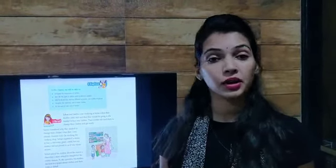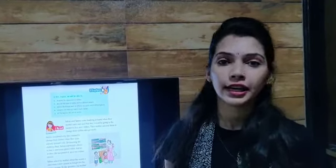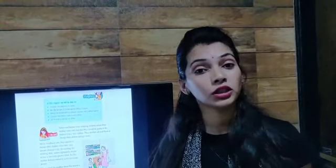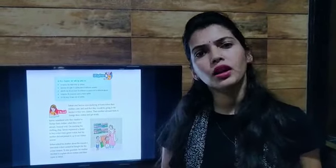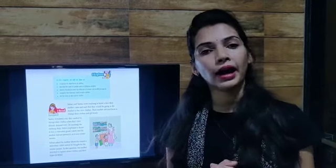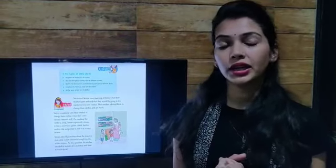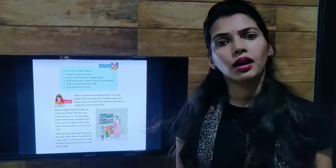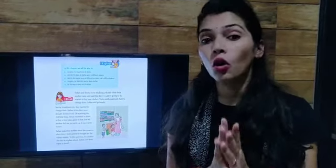In the shop, Sohan asked his mother to buy a sleeveless t-shirt for him, but his mother refused because it was the winter season. Sohan asked his mother why she refused. His mother explained to him about the different types of clothes and the clothes we wear in different seasons. Can you think why his mother refused? Because a t-shirt will not protect someone from the cold.